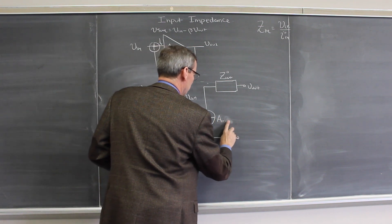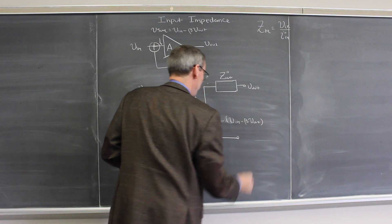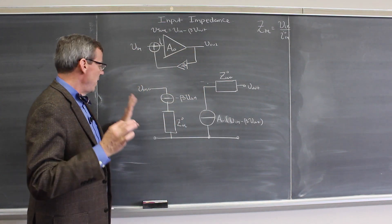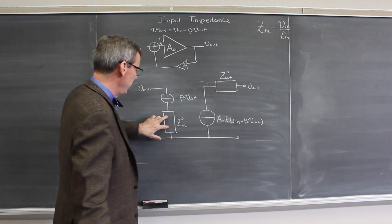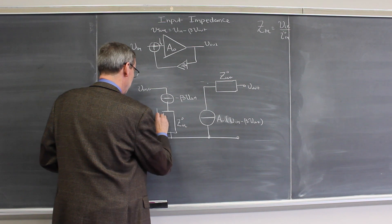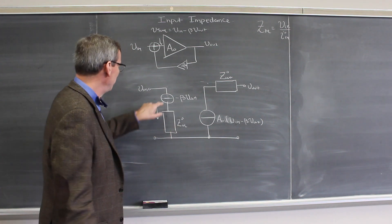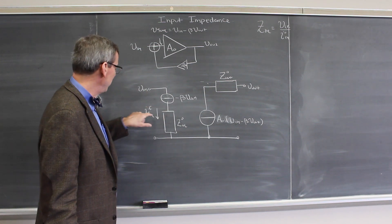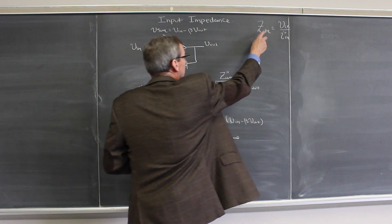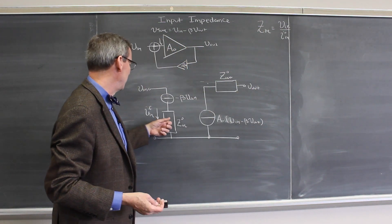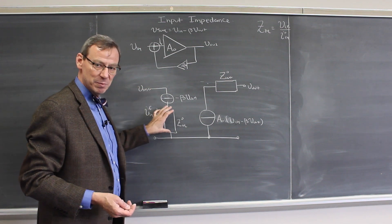The output becomes A0·Vsum, which is Vn minus beta·Vout. The input voltage is still going to be the same, and the input current is controlled by the current flowing through this input impedance here. This negative feedback actually lowers the voltage a little bit here, so the current going through here is actually going to be smaller than it was when there was no feedback. Smaller current, same voltage — we expect the input impedance is going to increase.